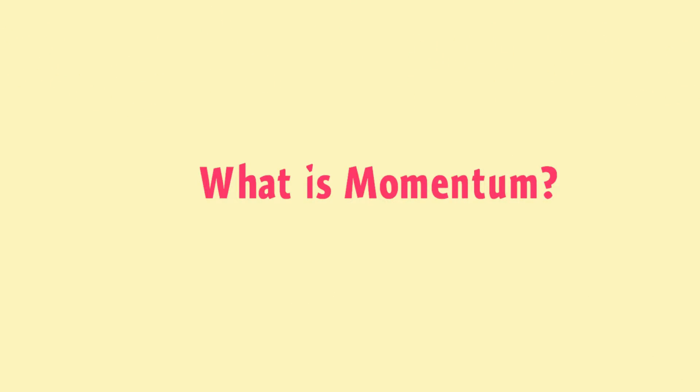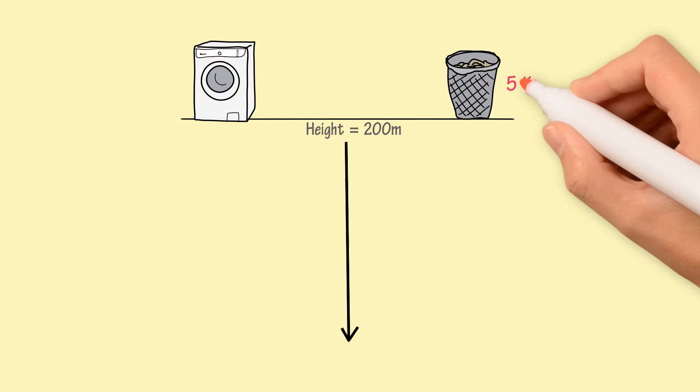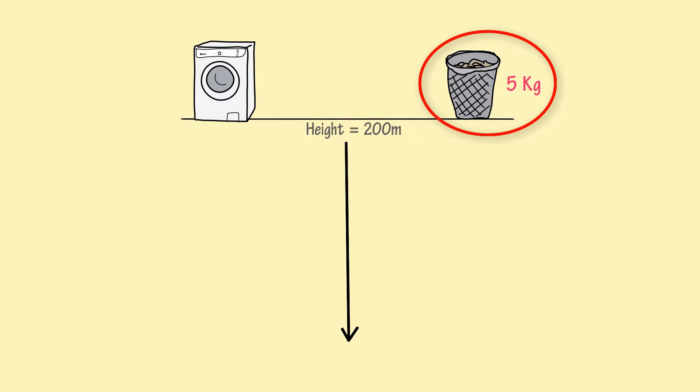What is momentum? Let's consider that two objects are falling down from a height of 200 meters. Let the mass of this object be 5 kg and the mass of this object be 50 kg.